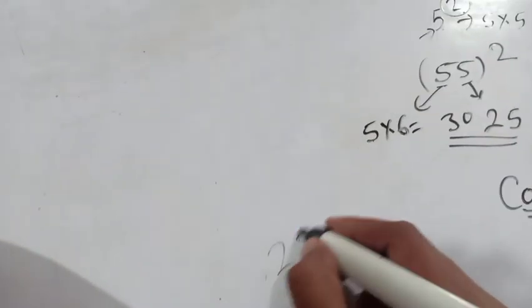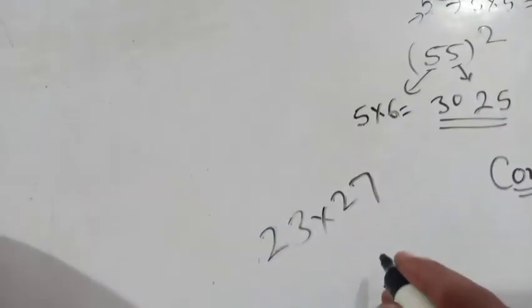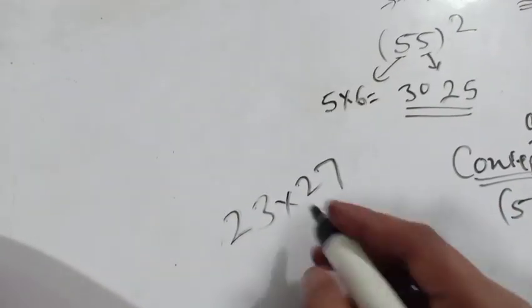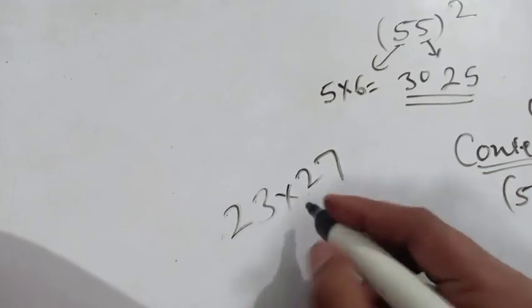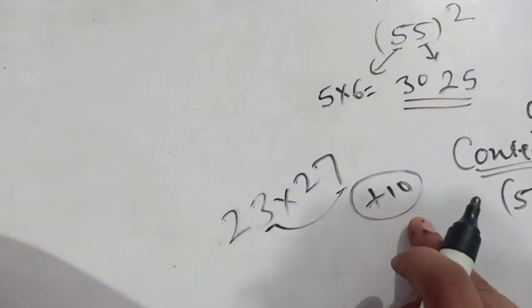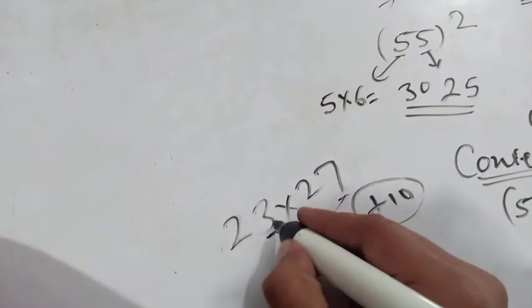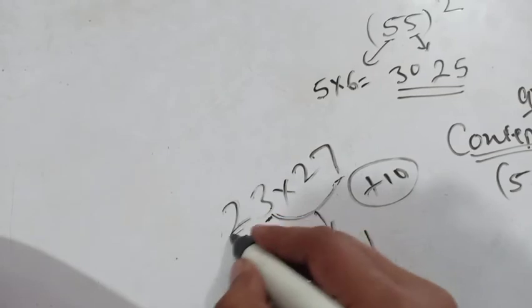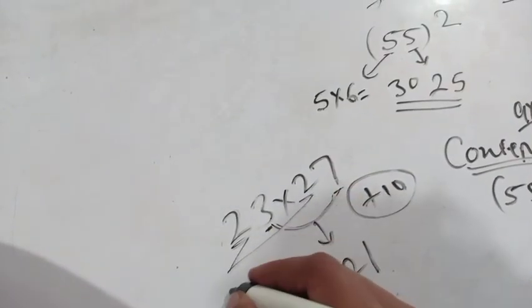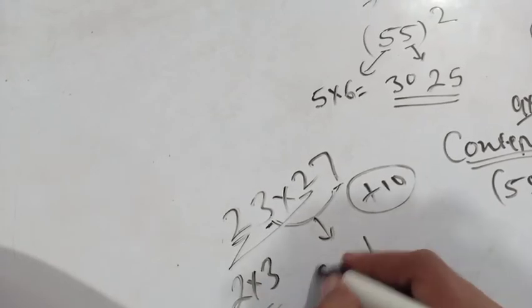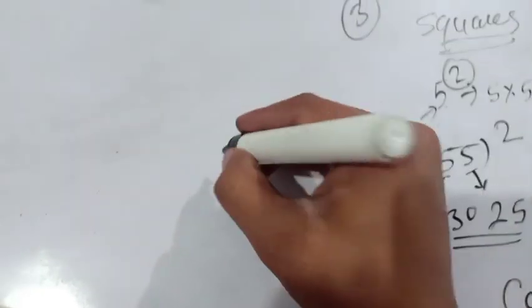We have to take 23 multiplied by 27. We can solve it also by the same concept. How we can solve? We suppose that 3 plus 7 become 10. This is very clear. So we can do 3 multiplied by 7. 3 multiplied by 7 become 21. And the 2 is common on 10th place. So 2 multiplied by 3 take 1 digit greater and multiply become 6. So this is your final answer. And we can do in our other question.